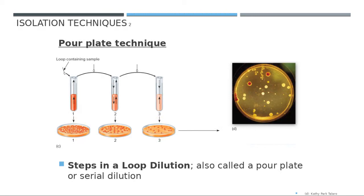The second technique is called the Pour Plate technique, which uses dilution. You dilute the first culture and grow it in agar media, then dilute it again and grow in another agar, then dilute again. By the third dilution, the colonies will be separated, making it easy to see individual colonies. The first plate is difficult to read because the colonies are combined together.